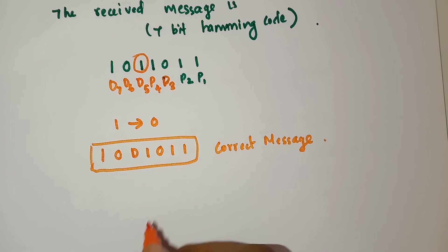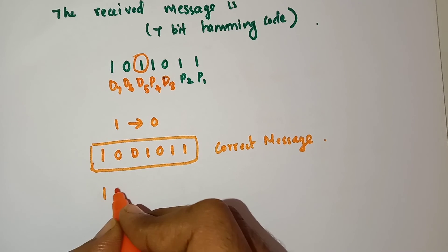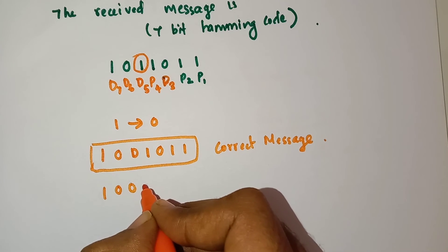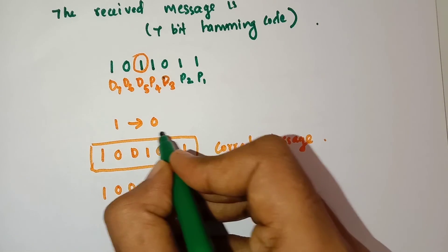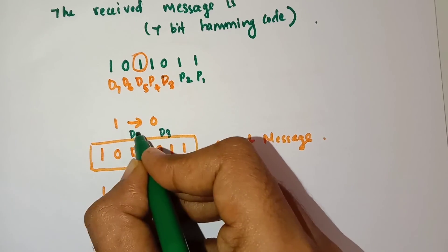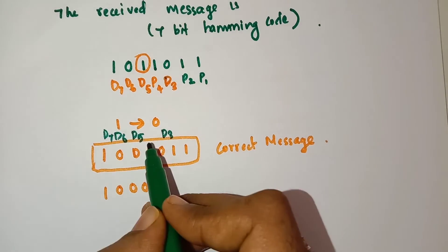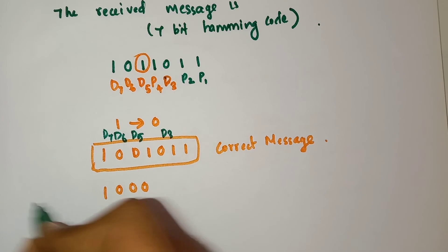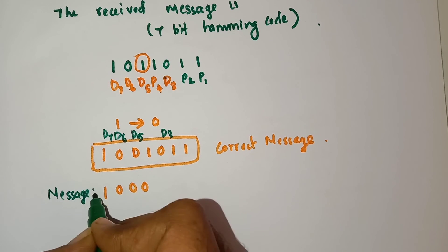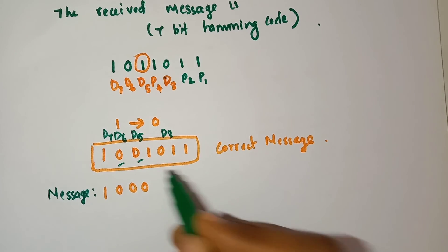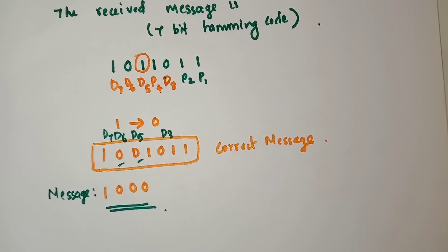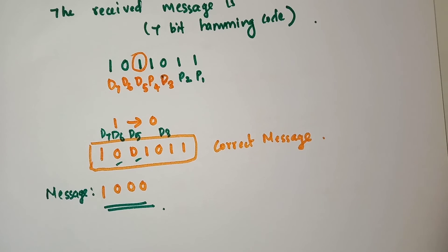From this, our data bits are extracted. The data bits are D3, D5, D6, D7. So our message is 1, 0, 0, 0. These are the data bits and our original message is 1, 0, 0, 0.